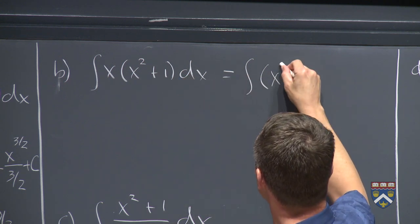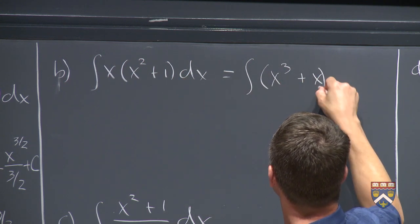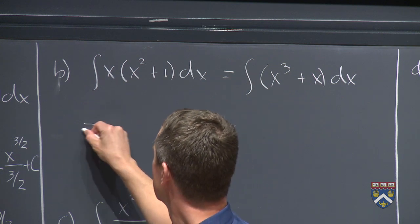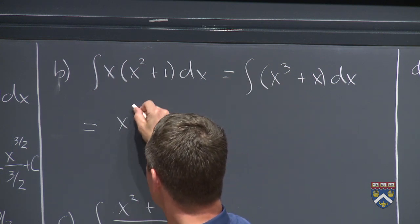But we can still do this problem by using a bit of algebra first and multiplying these terms out. So we'll get x times x squared, which is x cubed, and x times 1 is x. So now we know how to find the antiderivative of that.